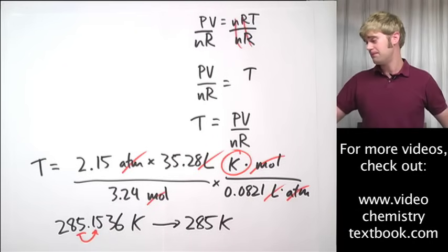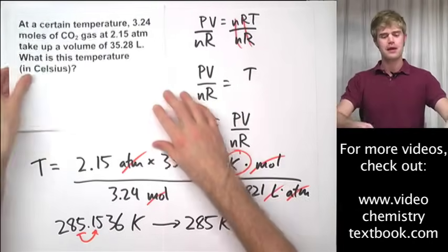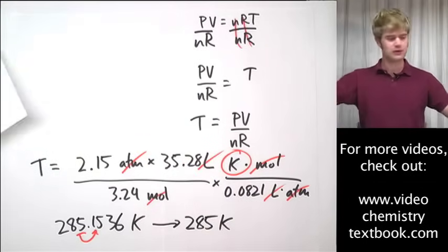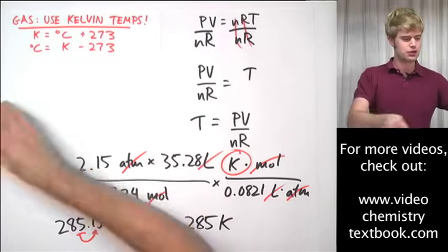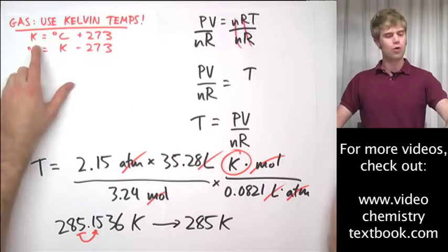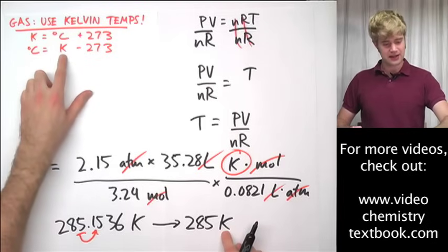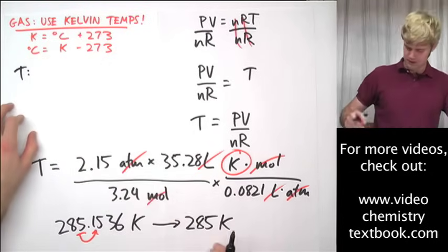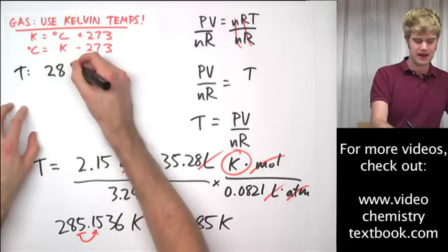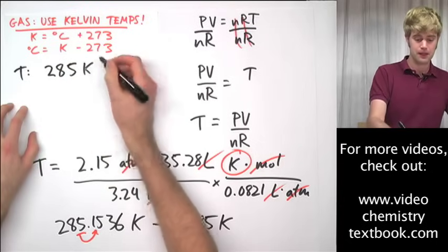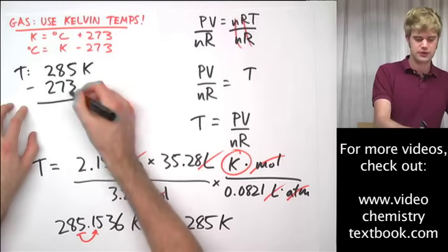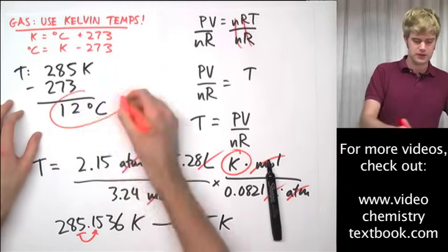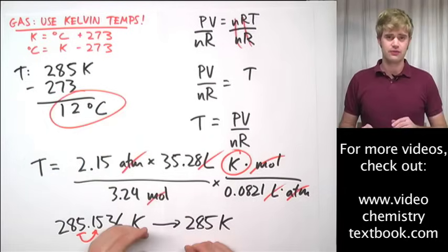But, we're not quite done yet. Because, if you remember, the question asked, what is this temperature not in Kelvin but in Celsius? So, the last thing that I've got to do is I've got to take this Kelvin temperature that I had and convert it back to Celsius. According to this equation, to get a Celsius temperature, I take the Kelvin temperature and I subtract 273. So, here's my temperature. 285 is my Kelvin temperature minus 273 and that is going to give me 12 degrees Celsius. And that is my final answer.